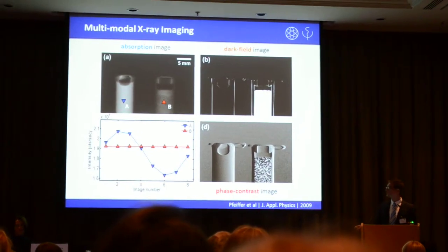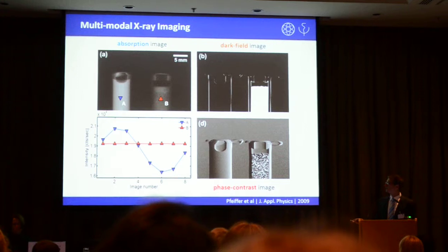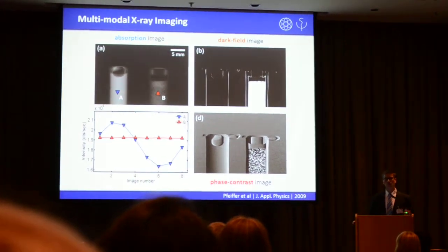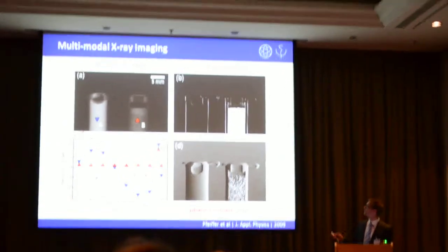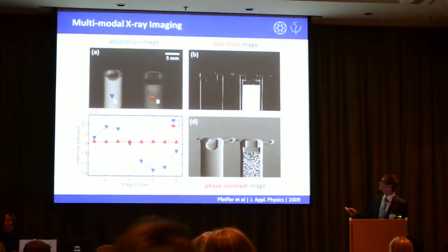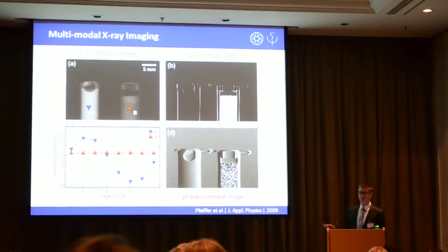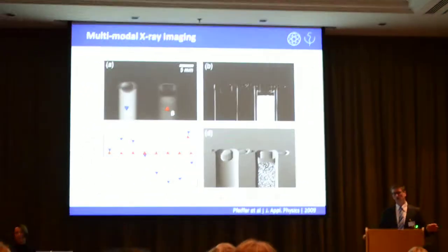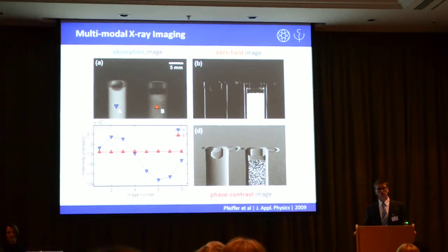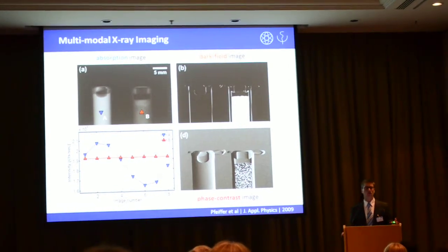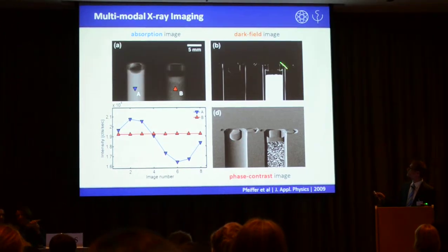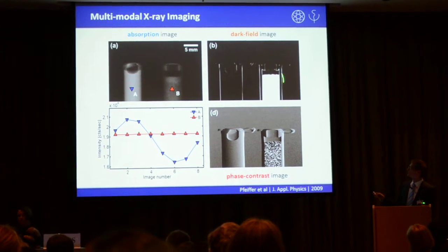But of course you can turn it around and say, now we are taking this loss of interference capability — the coherence of the X-ray beam — to form an image. And that's the one up here. So this highlights very much because it now scatters the beam very much. And if you look at microscopy or electron microscopy, this is called a dark field image because you're actually looking at scattering structures in the beam on a dark background.